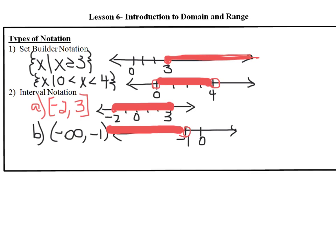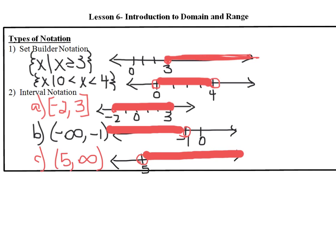Let's try one more of these sets. Let's say that we are going from 5 up to infinity. You'll notice that my 5 has a parenthesis, so that tells me my starting point is 5 but 5 is not included in the set, so I'm going to put an open circle at 5. Because I want to start at 5, I want everything shaded to the right of 5, and I'm going to keep going until I make it to infinity, which just means very large values on the right end of my number line.